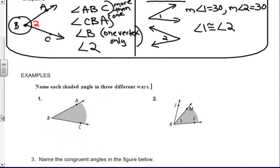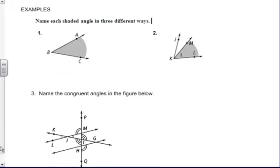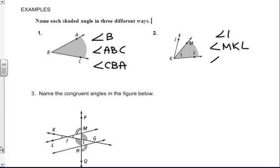And I know I gave you these notes before. Hopefully you were able to see this, that if I were going to name this angle in three different ways, I would call this angle B, angle ABC, and angle CBA. And if I was going to name this shaded angle, I could name it angle 1, I could name it angle MKL, or angle LKM for the shaded angle.